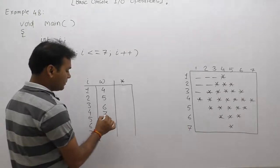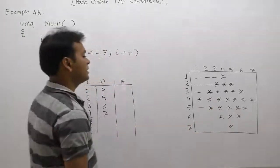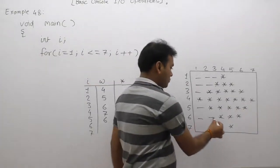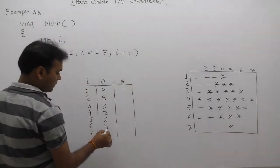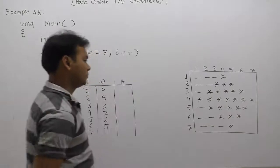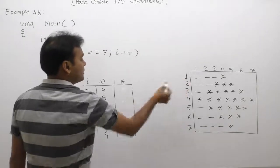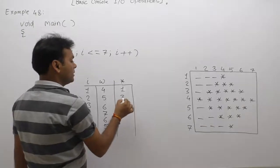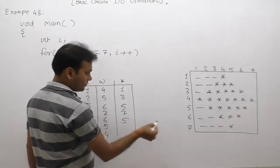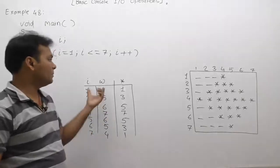In line four there are no spaces, all seven stars, so required width is seven. Next case: one space, five stars, total width six. Next: two spaces, three stars, total width five. Then three spaces plus one star, total required width is four. As for stars: first line needs one star, then three stars, five stars, seven stars, then decreasing — five, three, one.